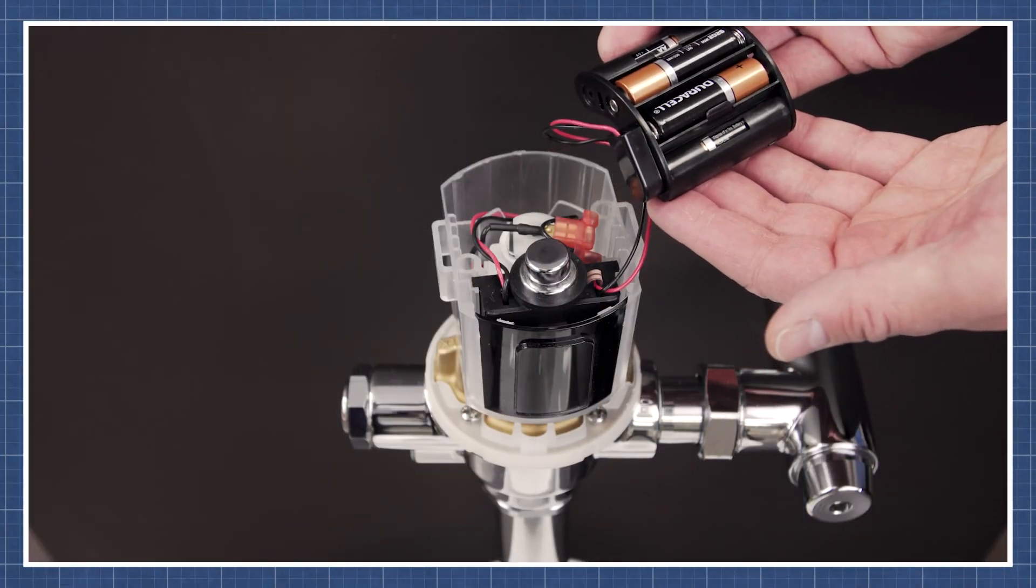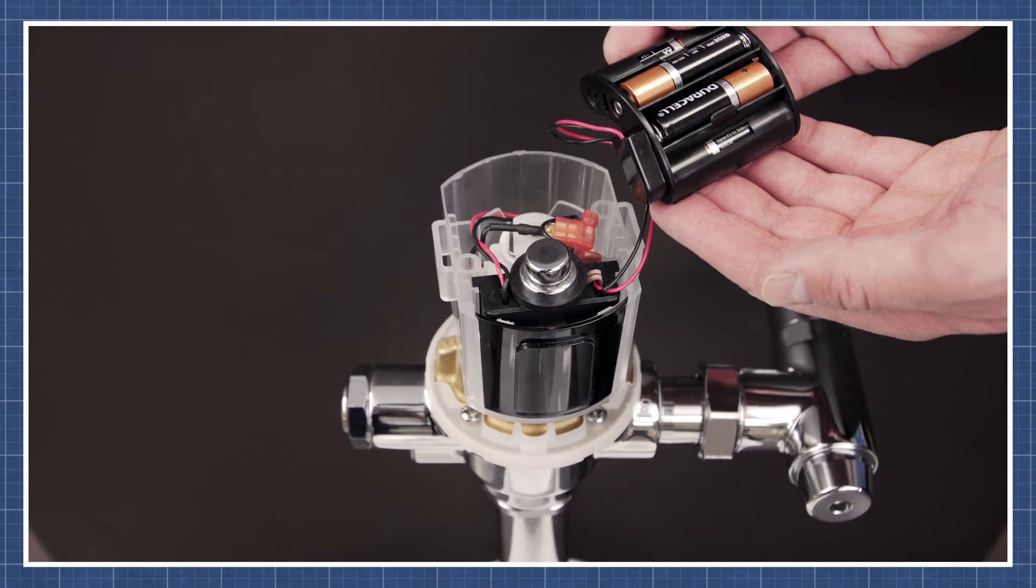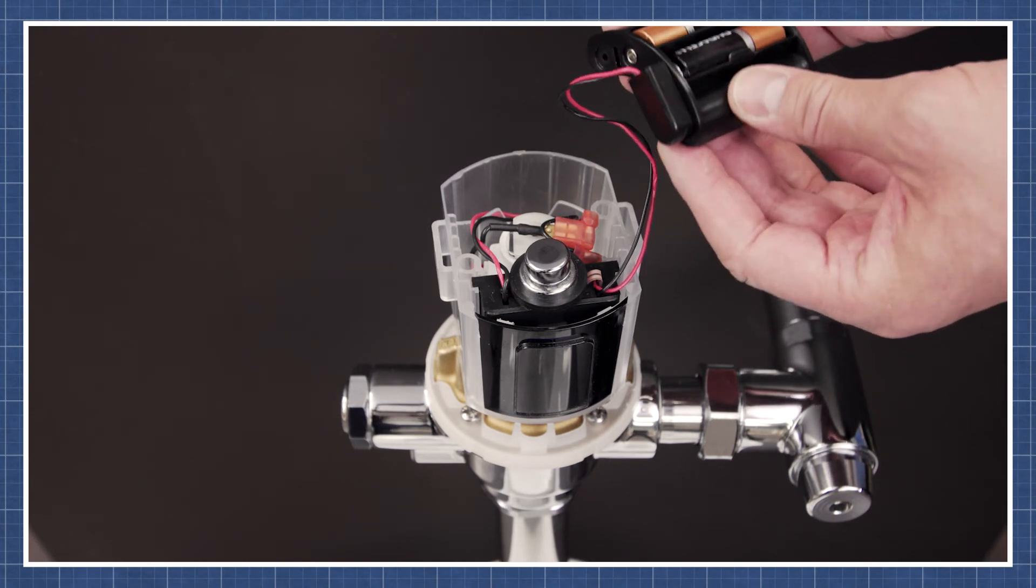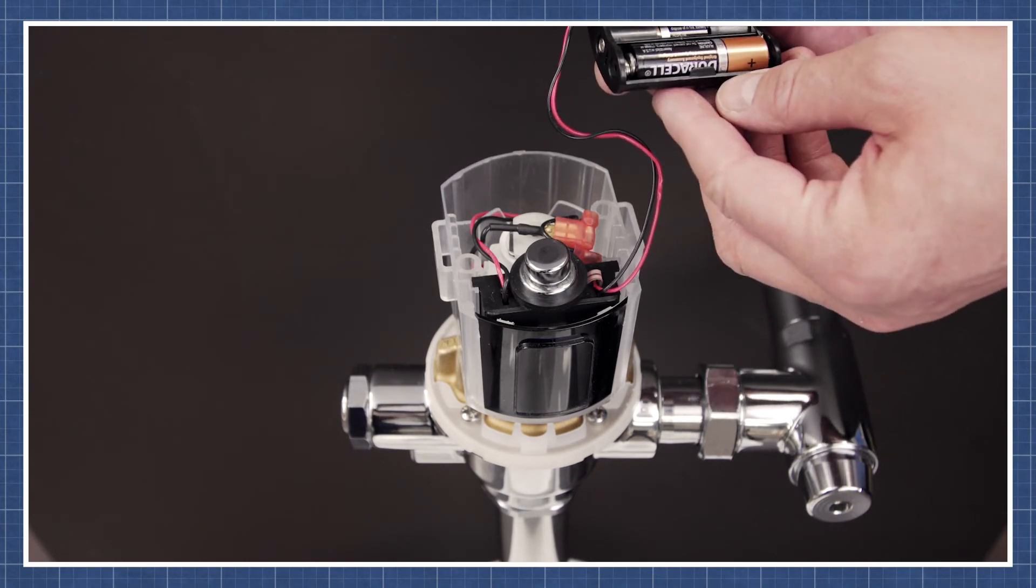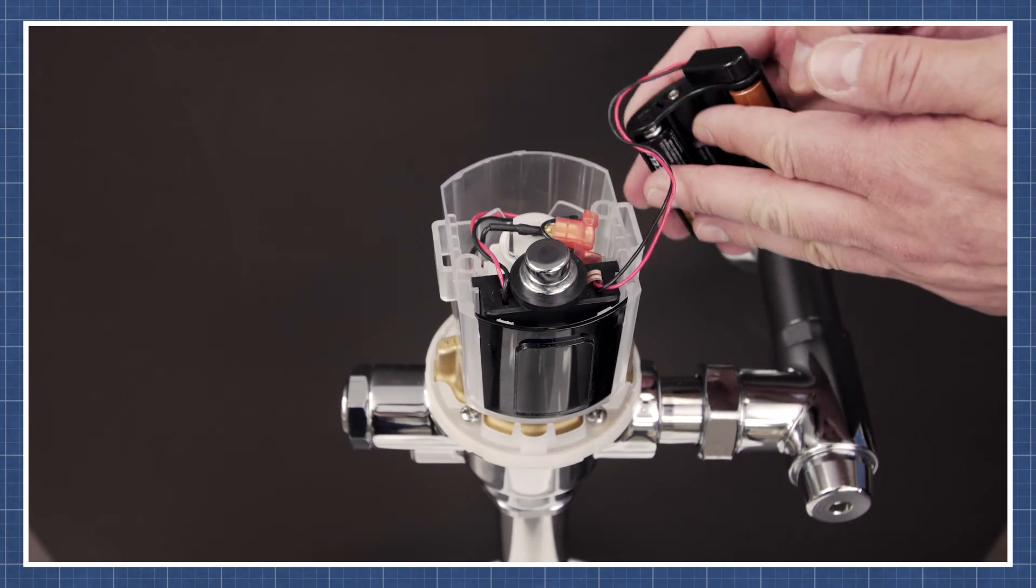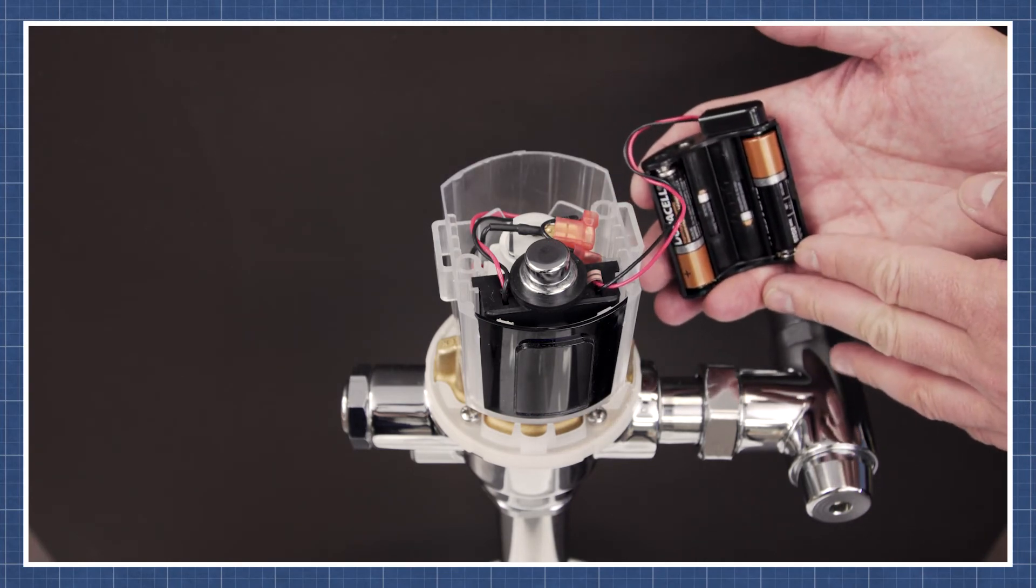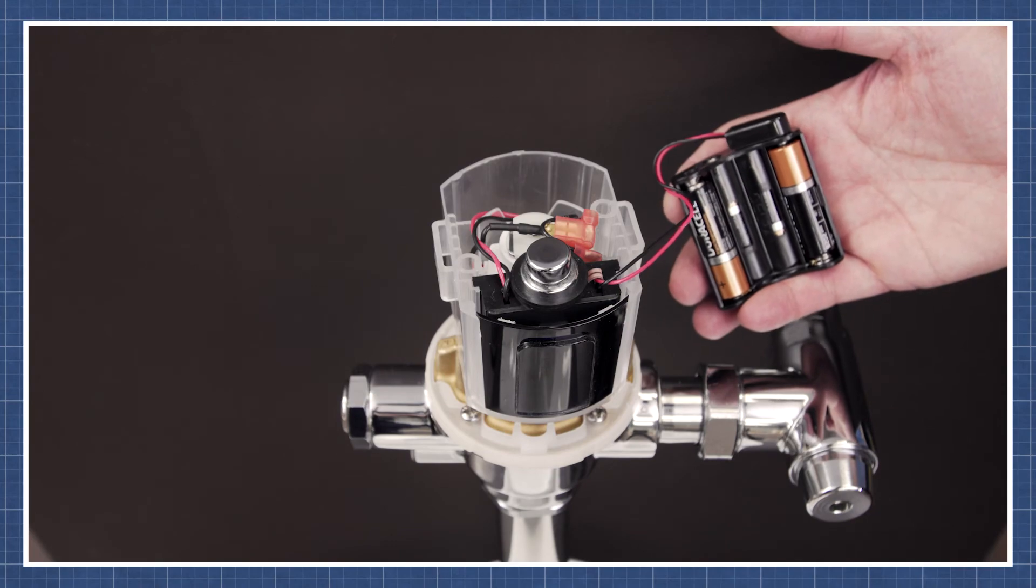If there are no lights and no power, check to see if the four AA batteries are positioned correctly in the holder. Check the positive and negative signs for the right position. If the position is correct but there is still no power, then replace the batteries. You can watch this in the video linked below.